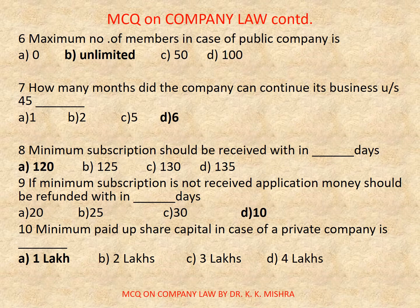Question number 6: Minimum number of members in case of a public company carrying on business under Section 45 — Options are: A) 1, B) 2, C) 5, D) 6. Correct option is D, 6.